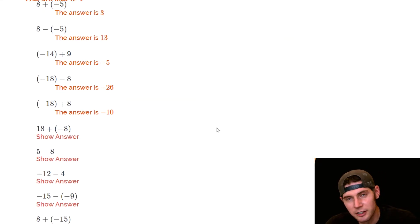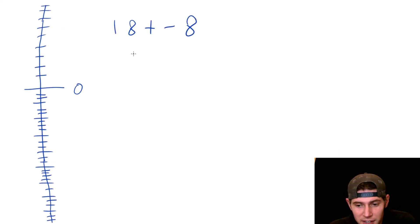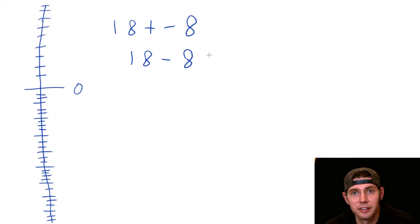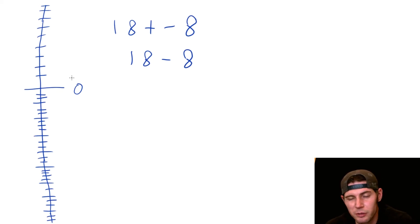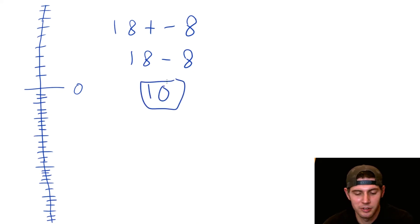Next: eighteen plus negative eight. You can think of this as eighteen minus eight — there's no difference between adding a negative number and subtracting a number. Eighteen minus eight is simply ten, so that's the answer.